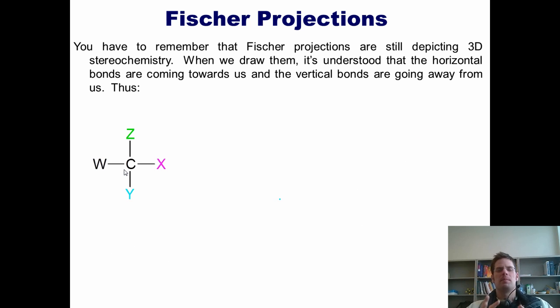To recap, I want you to remember that Fischer projections still are depicting three dimensional stereochemistry. Once again, when we draw them, it's understood that the horizontal bonds are coming towards us and the vertical bonds are going away from us. Thus, this Fischer projection is really just trying to show us this. And what in the world is that? Well, that, if we were drawing it using a traditional line bond structure with wedges and dashes, is this molecule shown here.